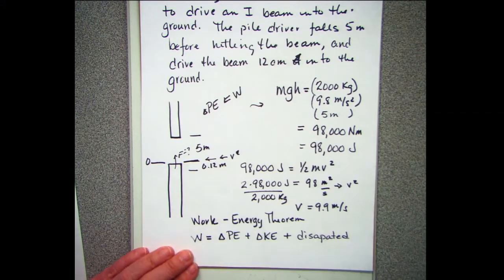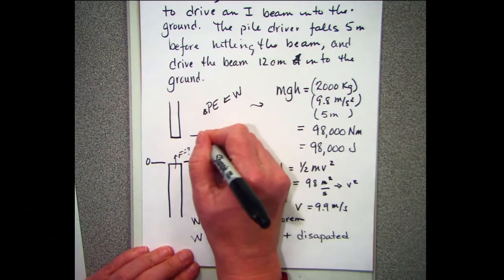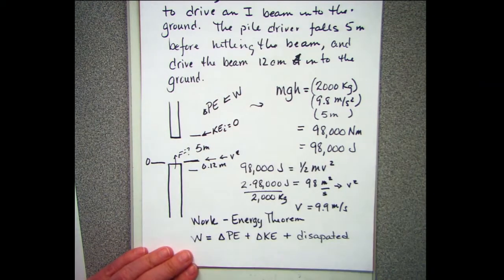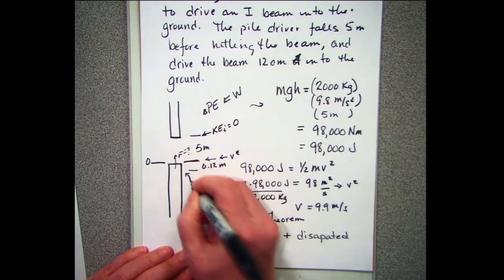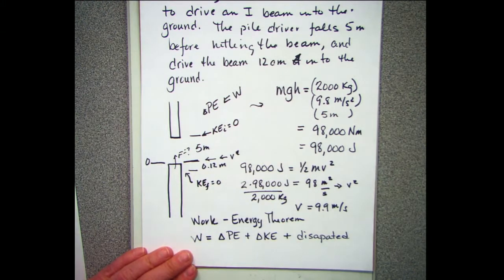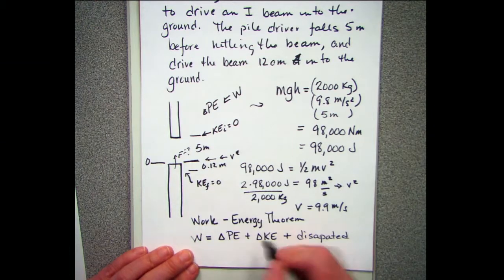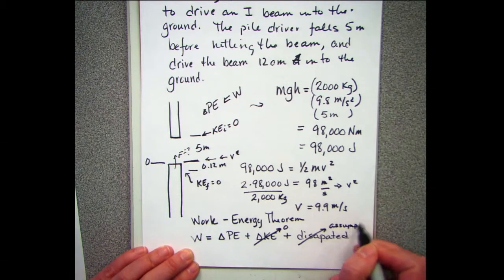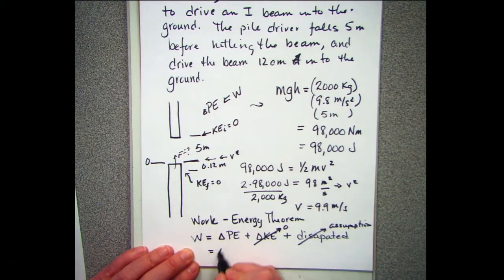Kinetic energy at the start equals zero because it's not moving, and kinetic energy at the bottom is also zero because it has stopped. So our change in kinetic energy is zero. Ignoring dissipative forces, the work done equals the change in potential energy.